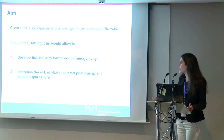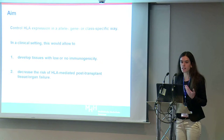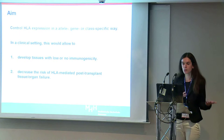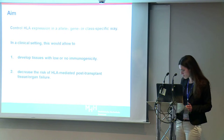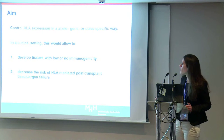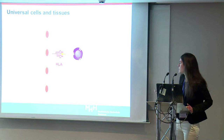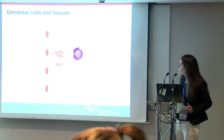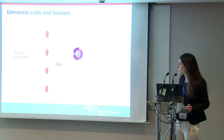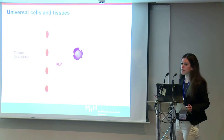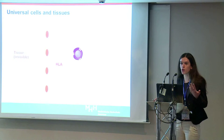The aim of our studies is the generation of cells, tissues or organs that cannot be rejected, or that have improved survival after allogeneic transplantation. For this, we aim to control HLA expression in an allele, gene, or class-specific way. Our hypothesis is that when we silence HLA expression, we can prevent recognition of foreign tissue by the patient's immune system, generating a condition we call immunological blindness.